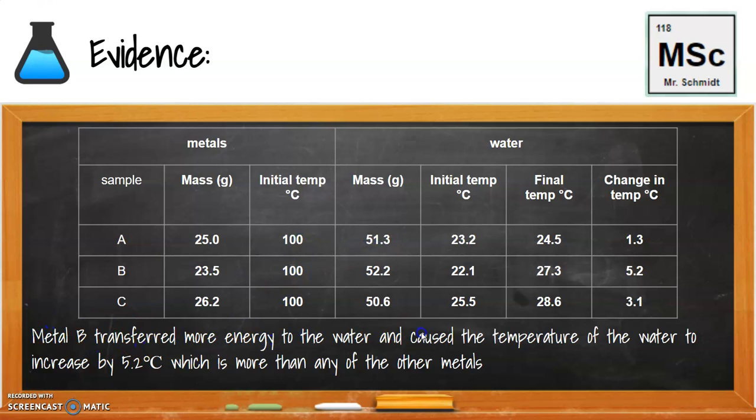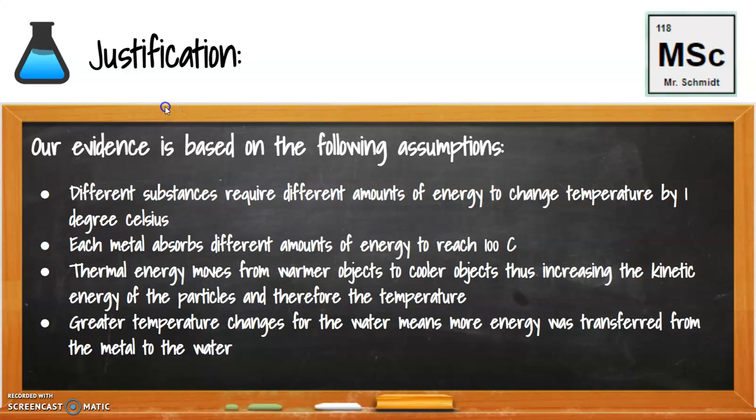And then there's our reasoning right here. Why is that important? Well, we constructed an experiment, and our reasoning showed that this sample B changed the temperature by 5.2 degrees Celsius, which is more than the others. So that answers our question. I'm going to go back here. Which has the greatest specific heat? Okay. So, again, we could further have some information in our justification part of our document here. So, different substances require different amounts of energy to change temperature by 1 degree Celsius. Each metal absorbs different amounts of energy to reach 100 degrees Celsius. Thermal energy moves from warmer objects to cooler objects, thus increasing the kinetic energy of the particles, and therefore the temperature. And greater temperature changes for the water means more energy was transferred from the metal to the water. Again, we're going to go through this when we talk about thermochemistry. This will be a unit that we cover in this course. So, we'll get into some of the scientific stuff later on. But I think you guys understand. I'm hoping that you understand kind of the claim, evidence, reasoning, or justification process here.